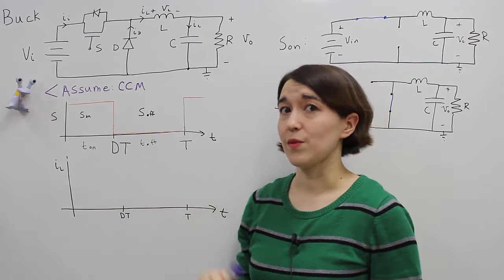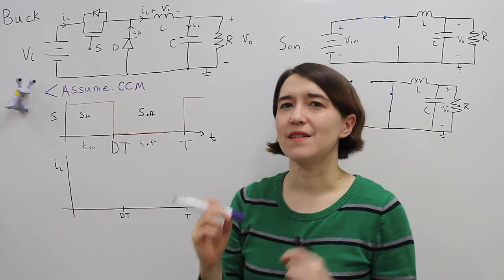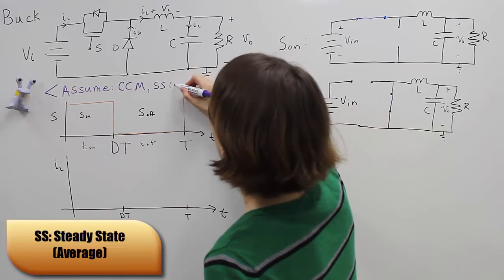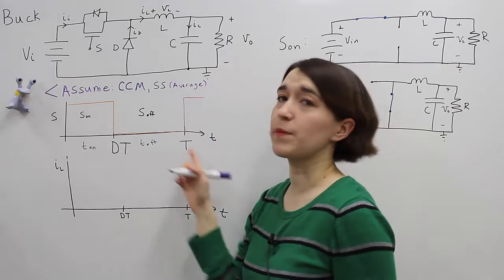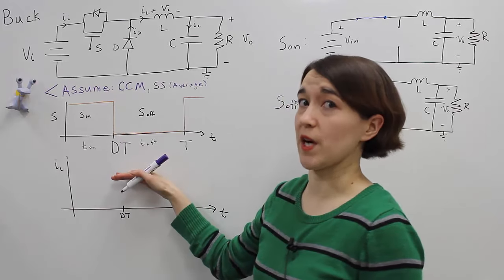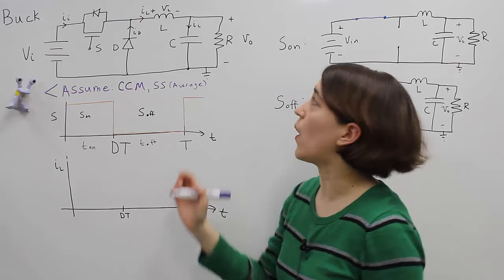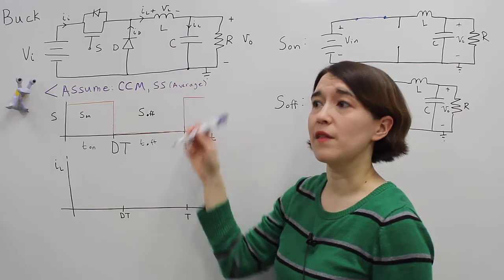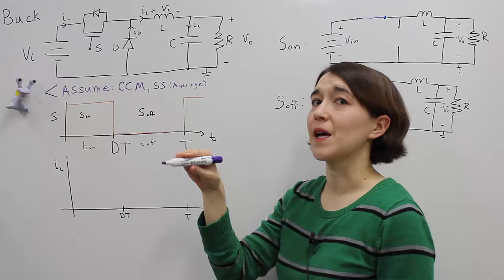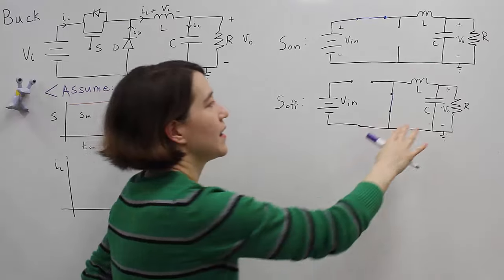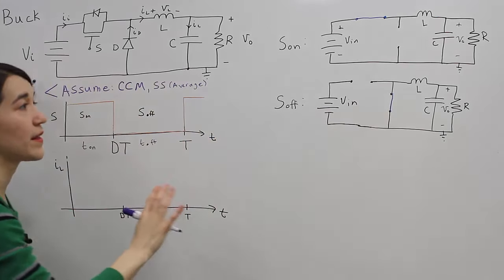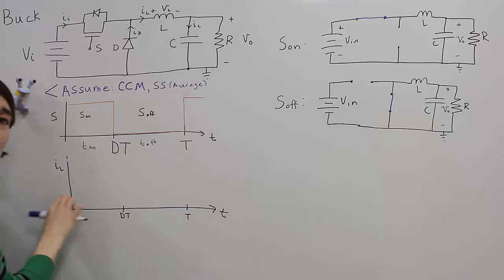We are assuming we are in continuous conduction mode. We are also assuming steady state operation in terms of the average value — the average value will be constant over a period. Within a period, values will be changing, but the average value will be constant. This means the average values of our dynamic components — the inductor and capacitor — will be constant on average. For the capacitor, the voltage on average will be the same, and we assume the capacitor is large enough that it won't change the voltage significantly over one period.